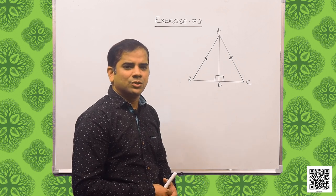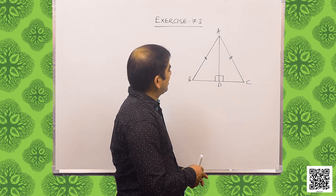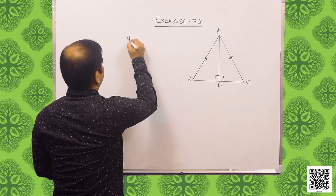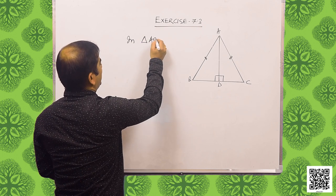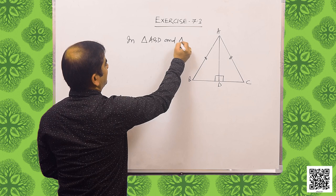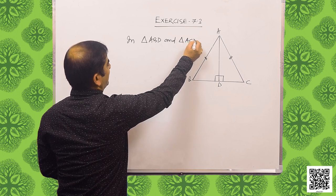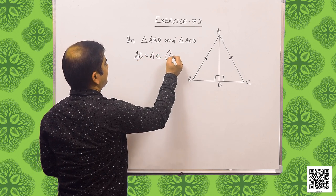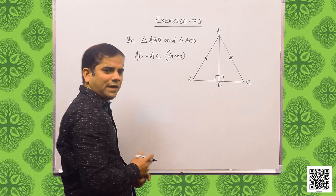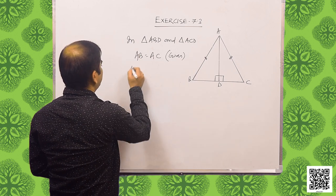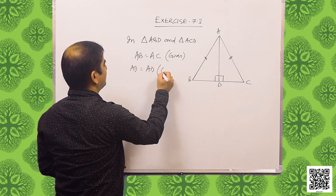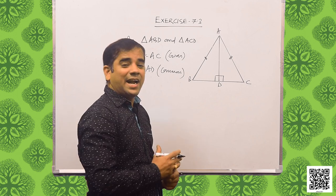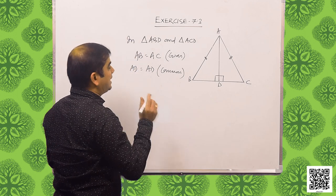As per the given data I have constructed a diagram. Let us consider triangle ABD and triangle ACD. In triangle ABD and triangle ACD, we have AB is equal to AC — it is given. AD is equal to AD — it is common. And angle ADB is equal to angle ADC.